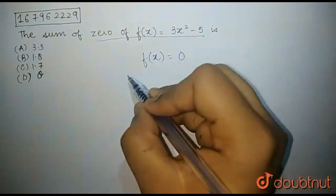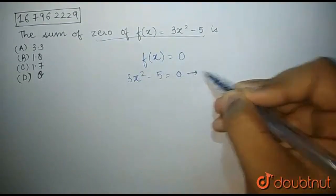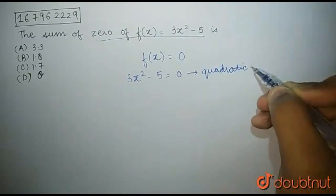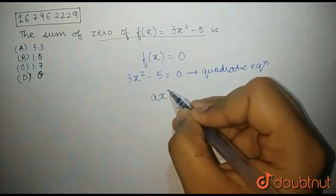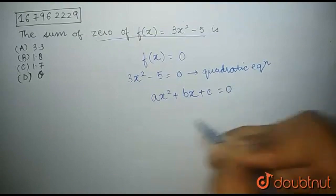f(x) equals to 0, and we get 3x² - 5 is equal to 0. Now, this is a quadratic equation.